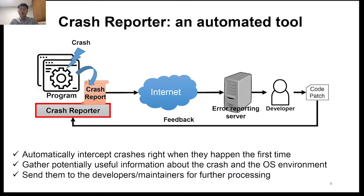A crash reporter is an automated tool for fixing crashes. The crash reporter collects crash information such as memory snapshots and CPU registers at the moment the crash occurs and writes a crash report to a file. Additional information such as memory map and execution environment information are also collected and added to the file. The collected information is transmitted to the developer, who replays it using that information and applies a fix to the latest release.